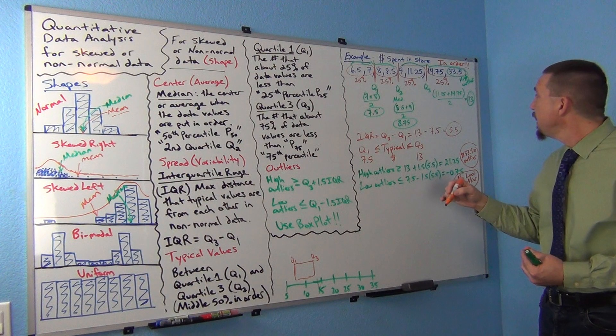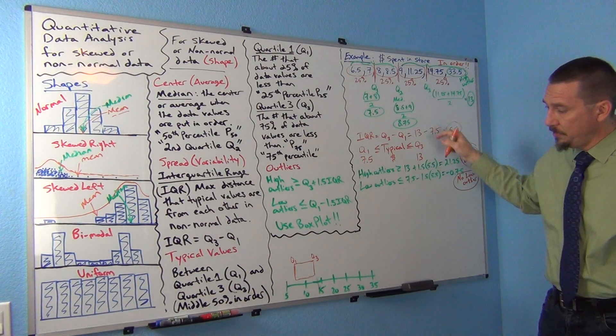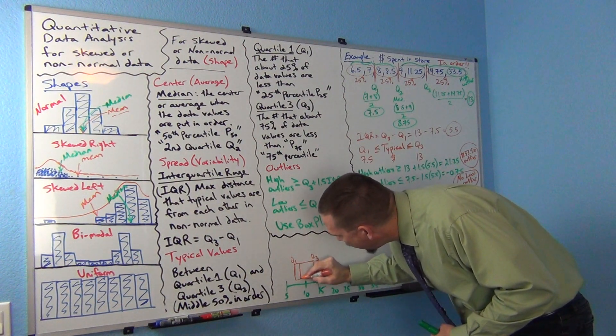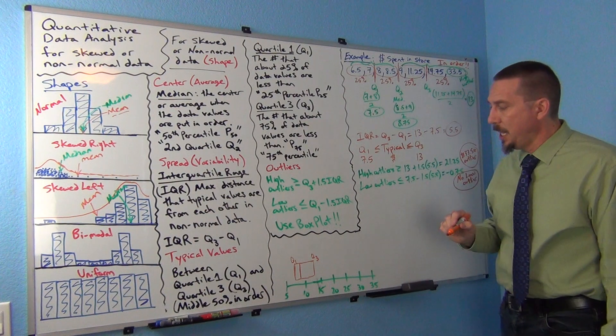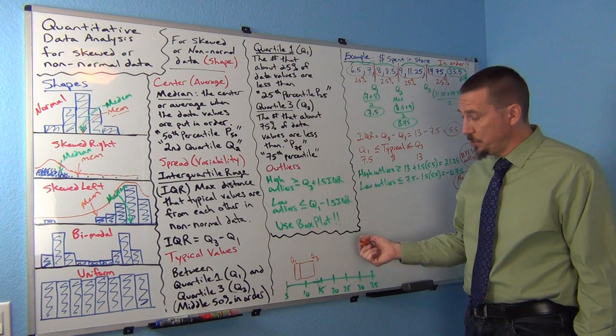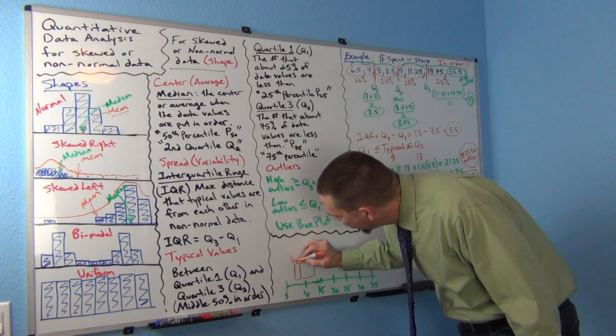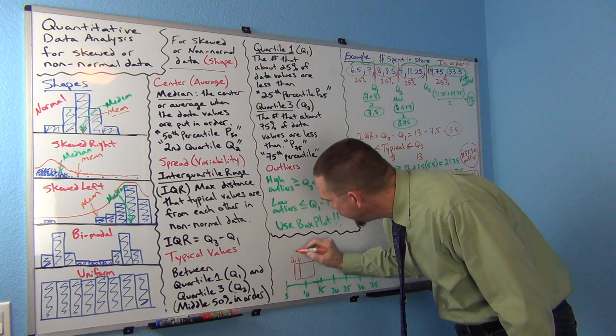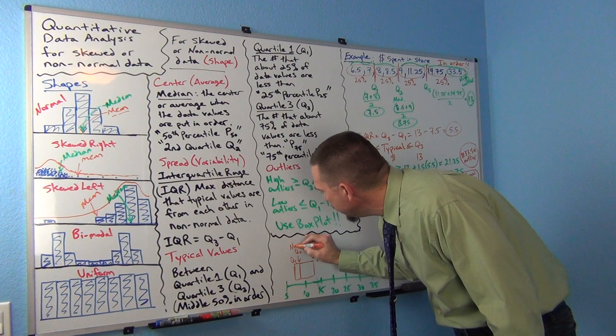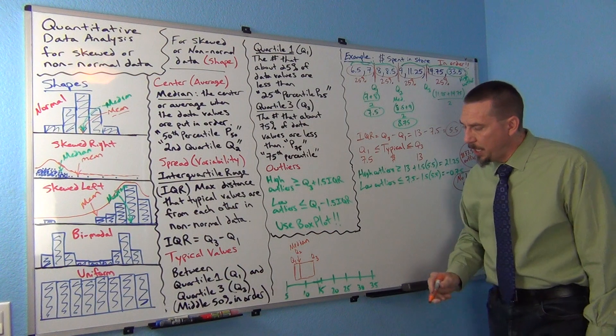So the far left of the box is always quartile 1. The far right of the box is always quartile 3. Now they'll draw a line inside the box at the median, the average, so 8.75. By the way, don't think that this has to be in the middle of the box. It's not. This is not based on distances like the mean is. It's based on just the numbers in order. So the quartile 2, the median, could really fall anywhere. Here's our quartile 2 or median.